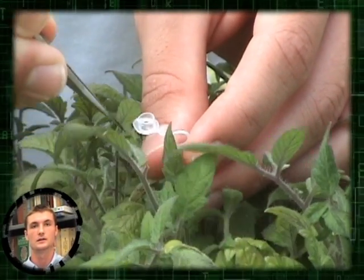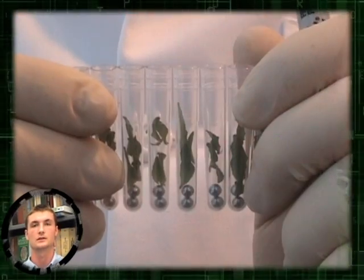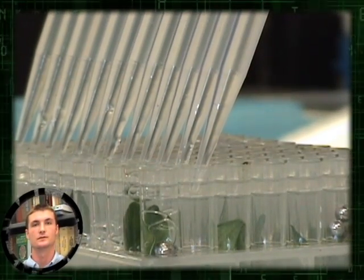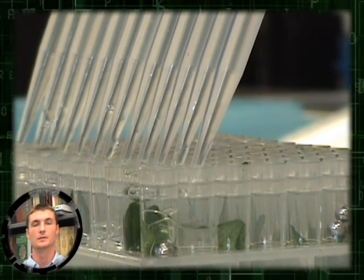We start by collecting leaf tissue from young plants. DNA extraction from tissue can be performed at different scales. The process is most efficient when performed in batches of 96.